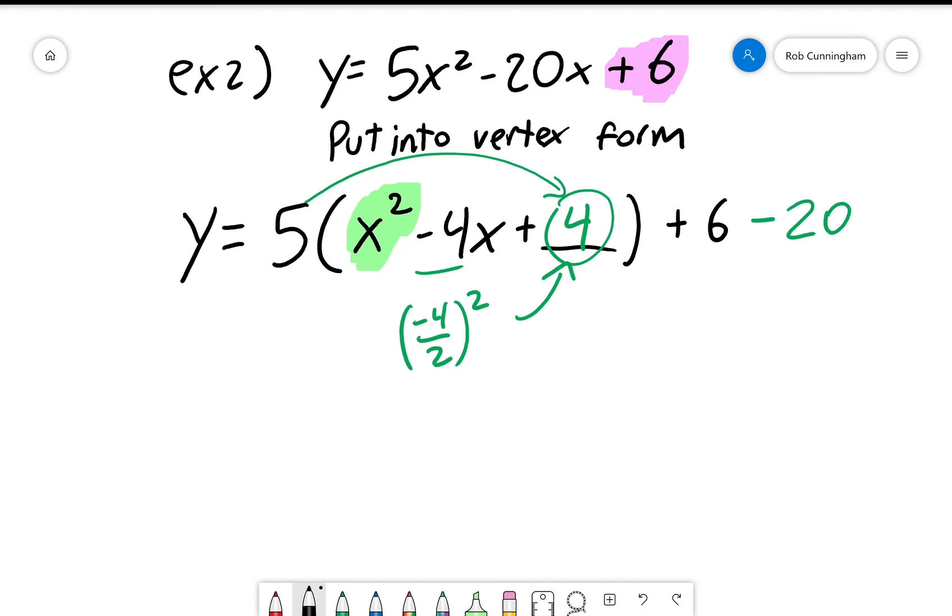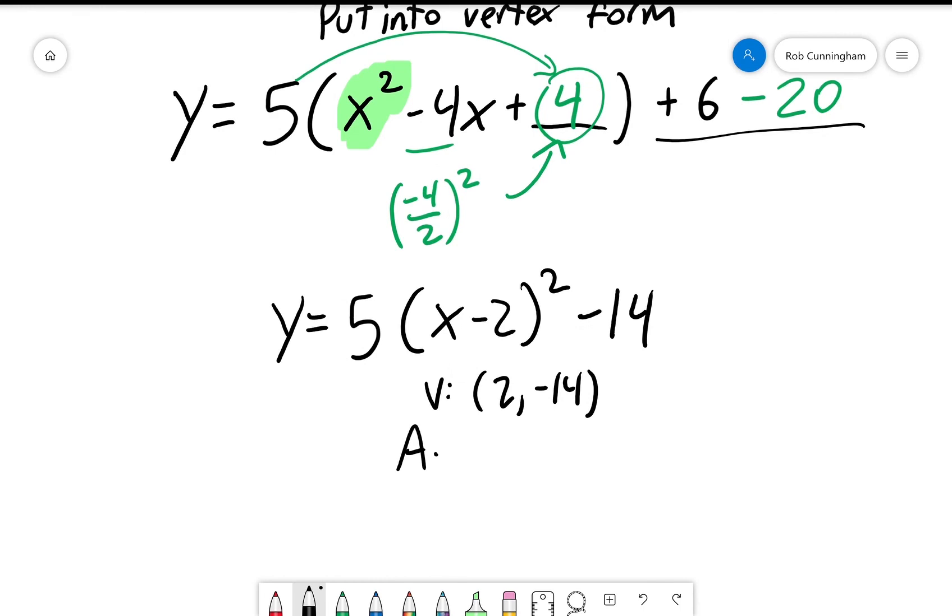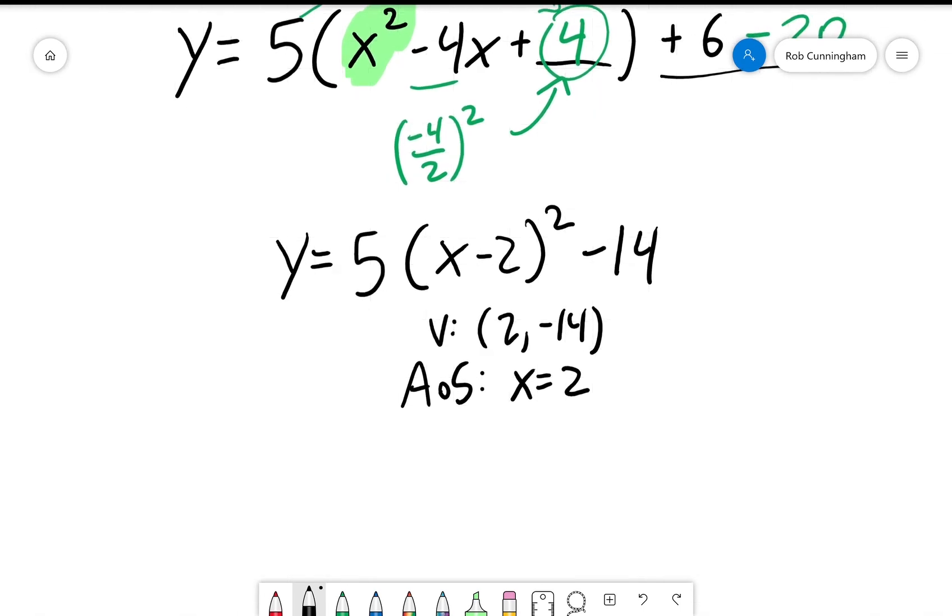So my vertex form is y equals 5 times x minus 2 squared. Again, that entire x squared minus 4x plus 4 turns into this x minus 2 squared. They are equivalent. Combine like terms: plus 6, negative 20, minus 14. My vertex is 2, negative 14. My axis of symmetry is x equals 2. And hey, I've got a 5 times vertical stretch.